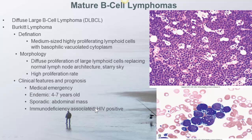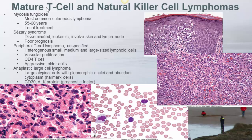Mycosis fungoides is the most common cutaneous lymphoma, affecting people aged 55 to 60 years. The image on the top shows neoplastic lymphocytes invading the epidermis. Prognosis is excellent, and local treatment is sufficient.